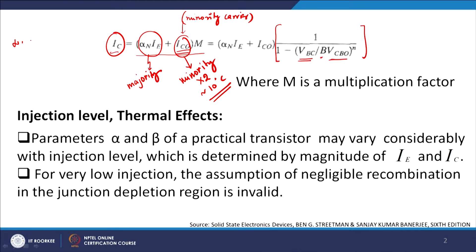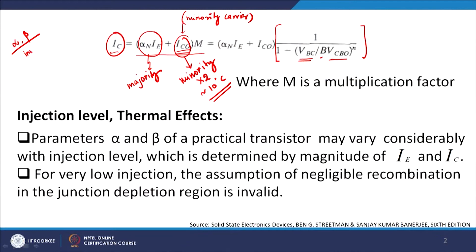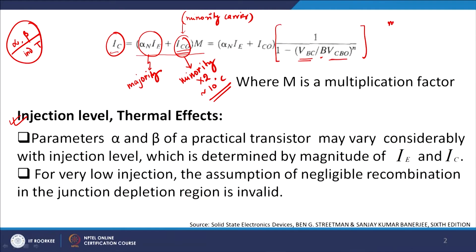We have also considered that alpha and beta, which are the current gain in common emitter and common base configurations, are primarily independent of temperature. In reality this is not true, and that is what the second issue is. The thermal effect primarily means that this BJT is working in an environment where applied voltages are very large, and your collector current is of the order of milliamperes.